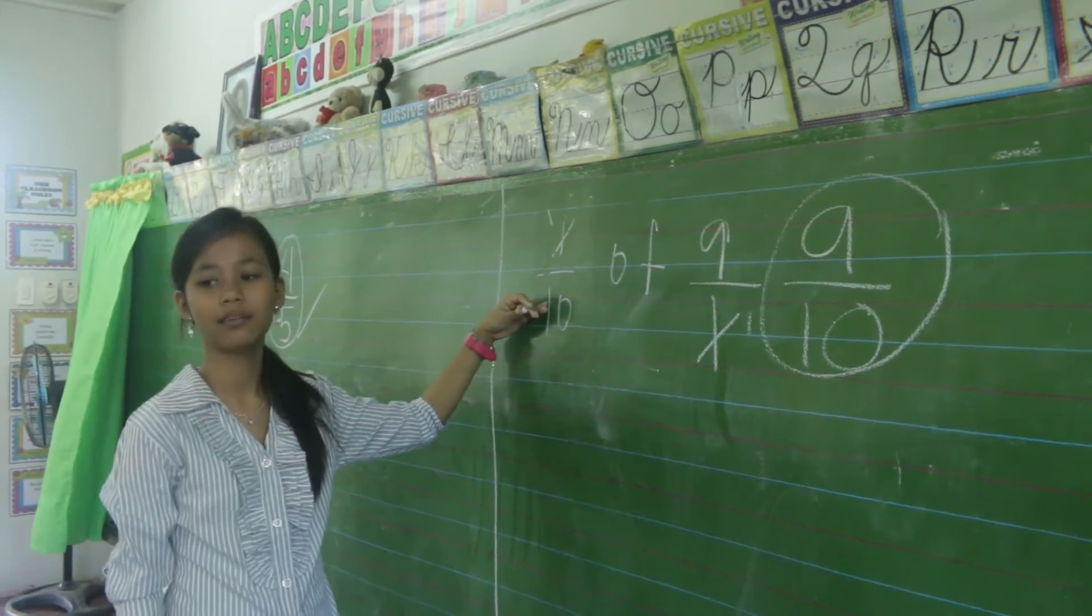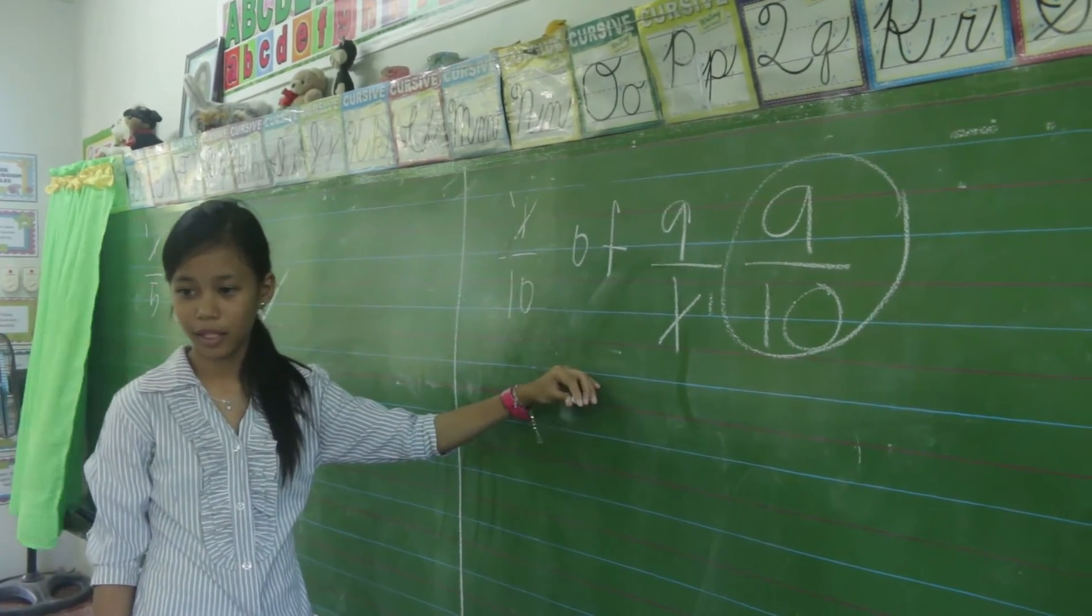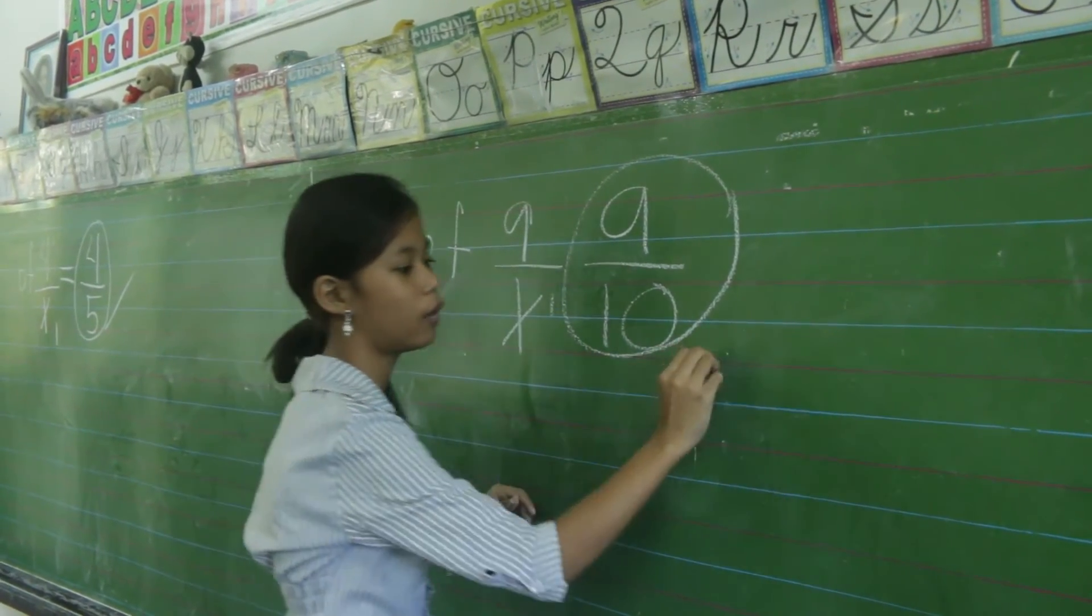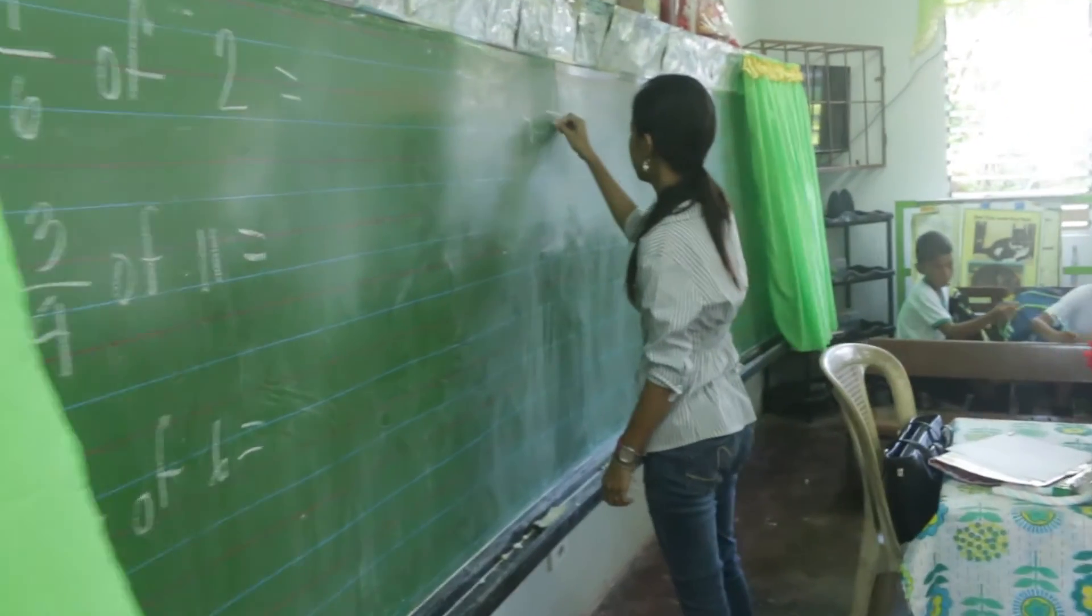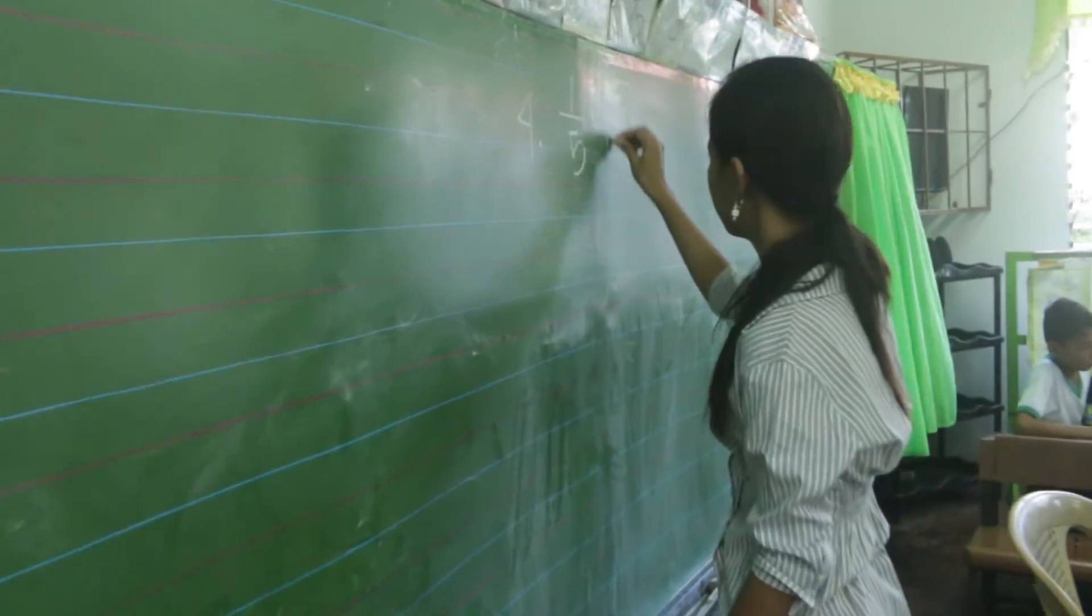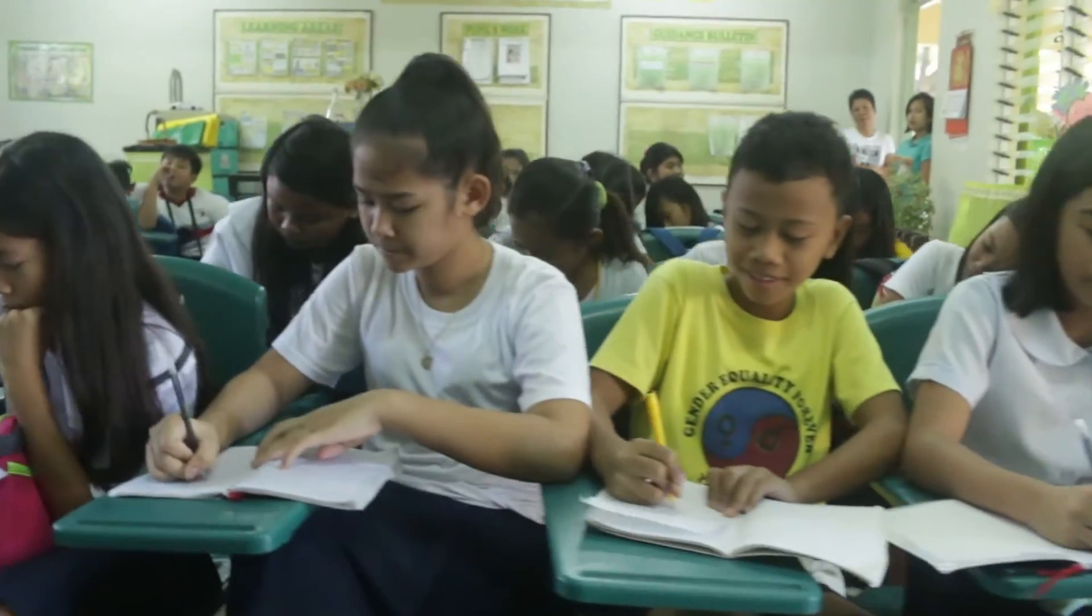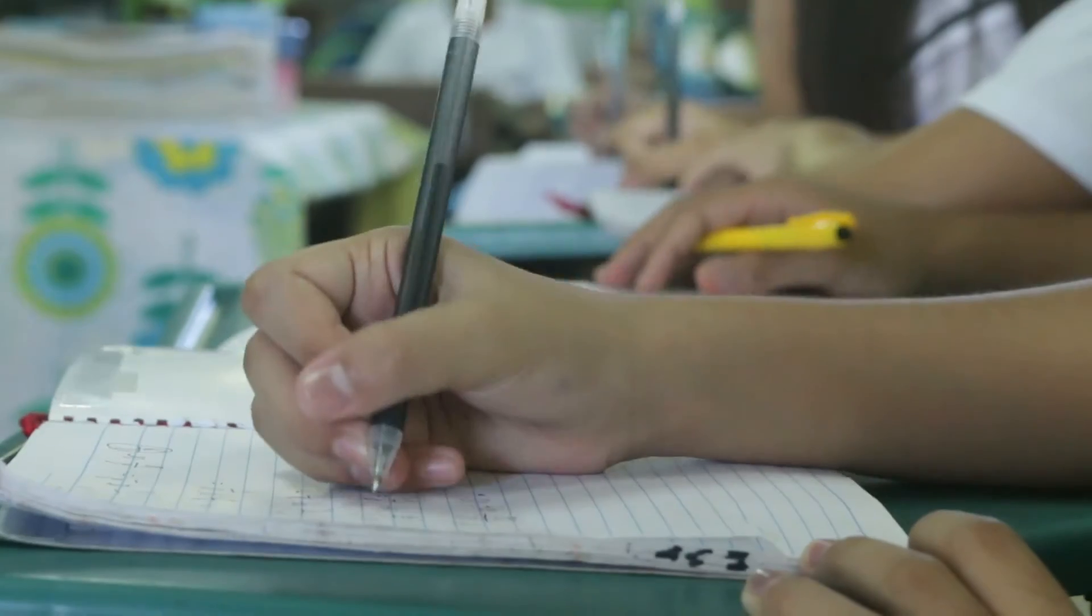1 times 9? 9! 10 times 1? 10! And the answer is? 9 over 10! Correct!